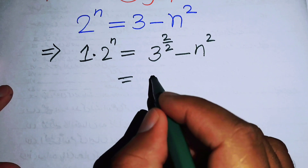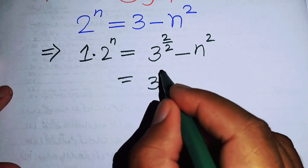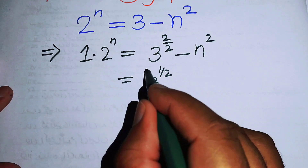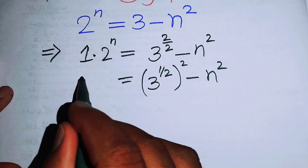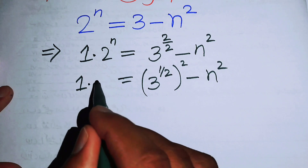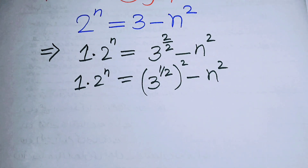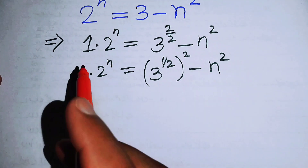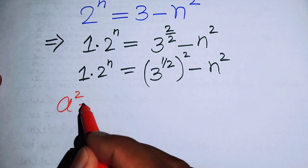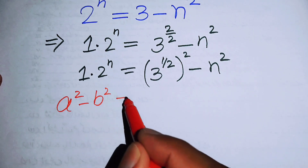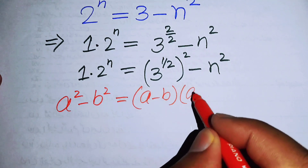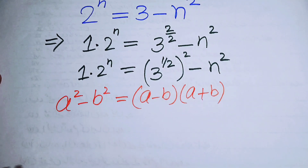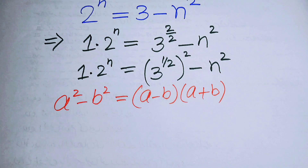We can arrange the right-hand side as 3 to the power of 1 over 2, whole squared, minus n squared. On the left-hand side we have 1 times 2 to the power of n. Now we can apply the nice identity: a squared minus b squared equals (a minus b) times (a plus b).